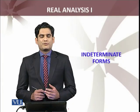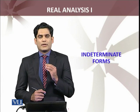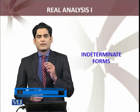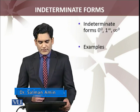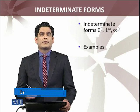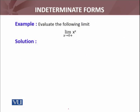Let's see some examples involving the indeterminate forms: 0 raised to power 0, infinity raised to power 0, and 1 raised to power infinity. The first example is: evaluate the following limit — limit as x approaches 0 from the positive side of x raised to power x, which gives us the 0 raised to power 0 form.